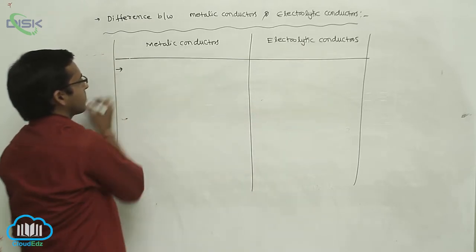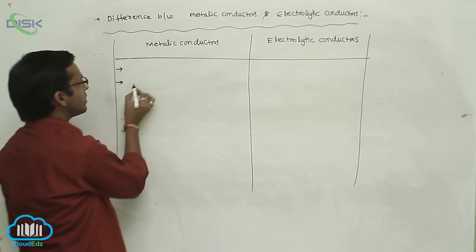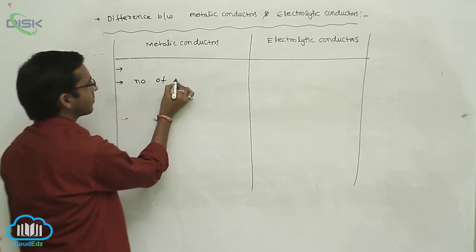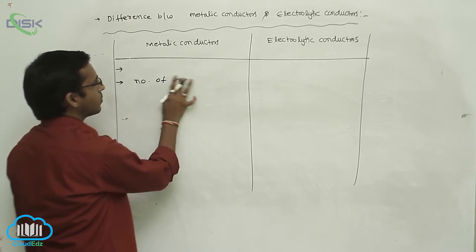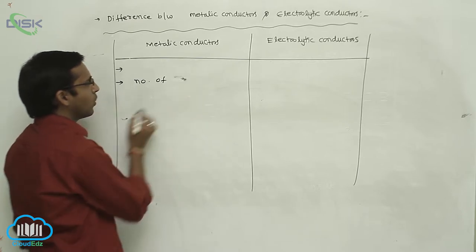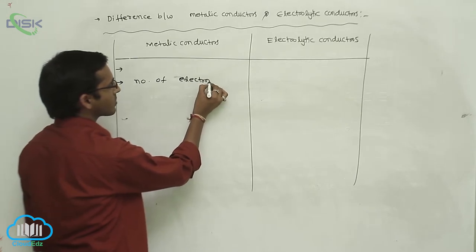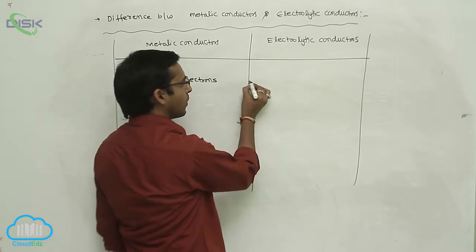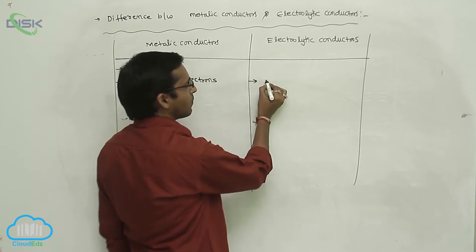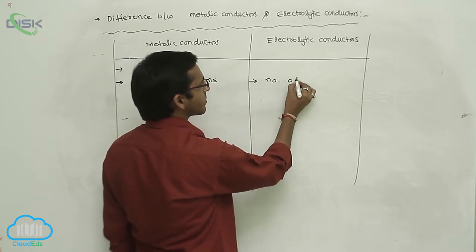In metallic conductors, the flow of electricity depends on the number of electrons. In electrolytic conductors, the flow of electricity depends on the number of ions.